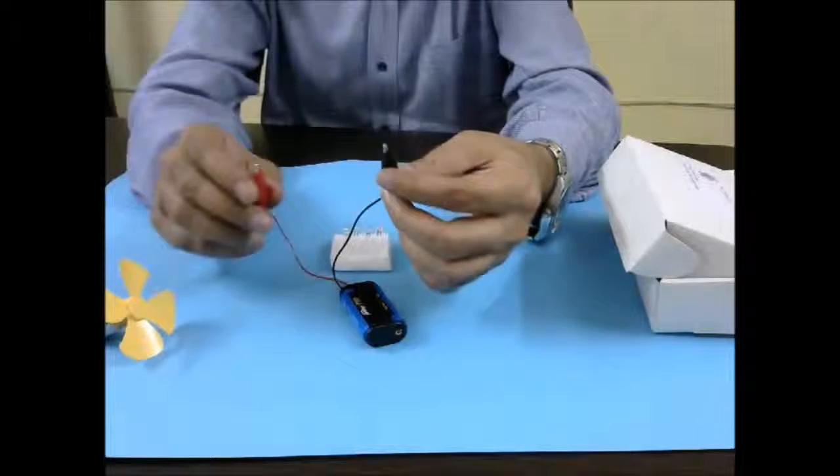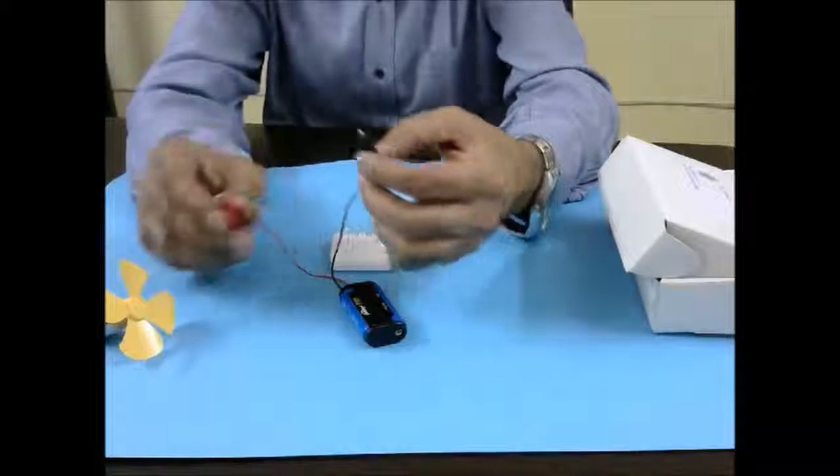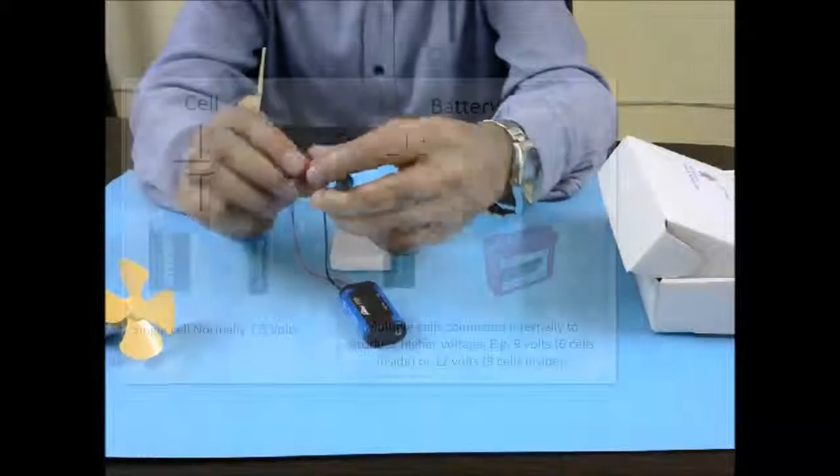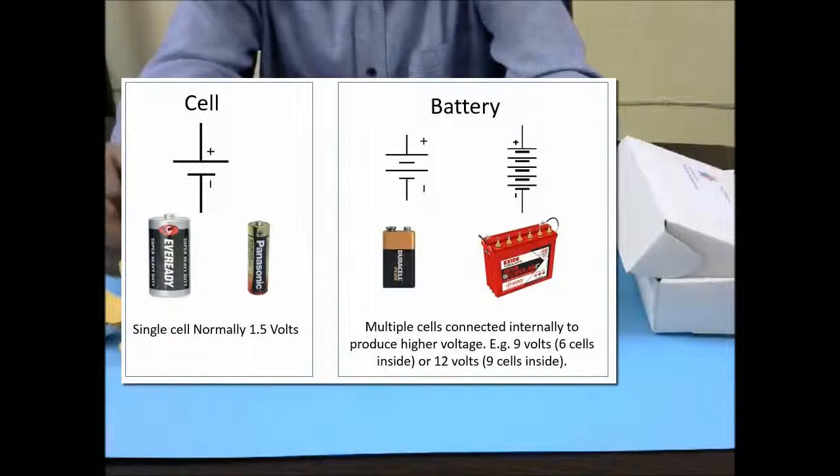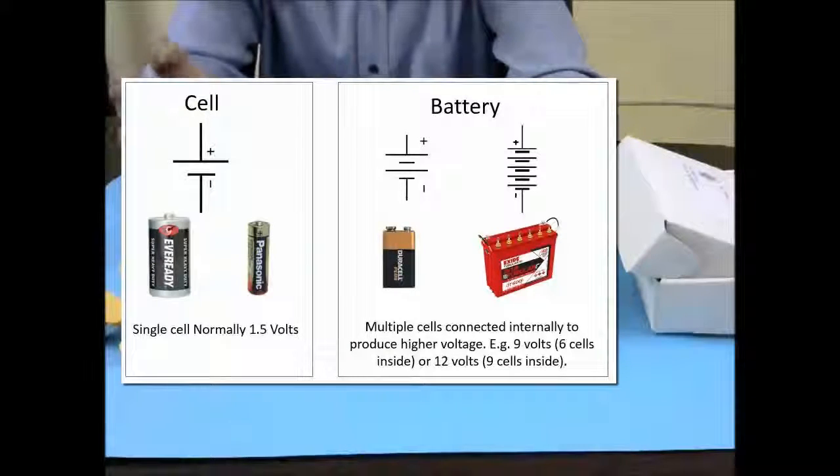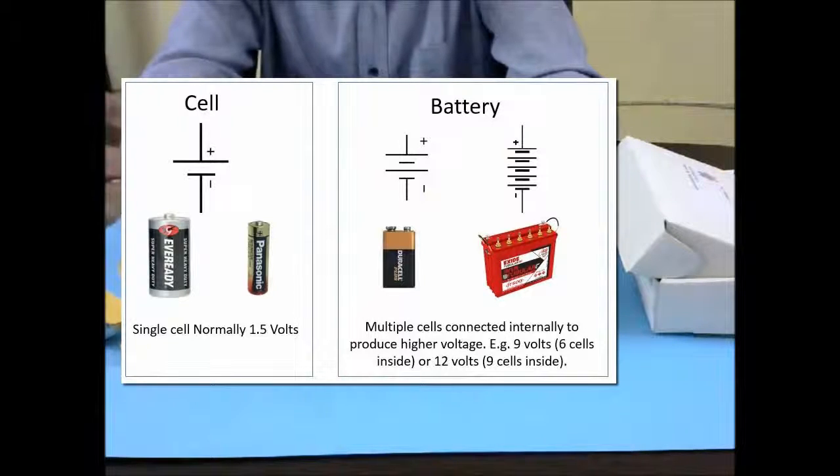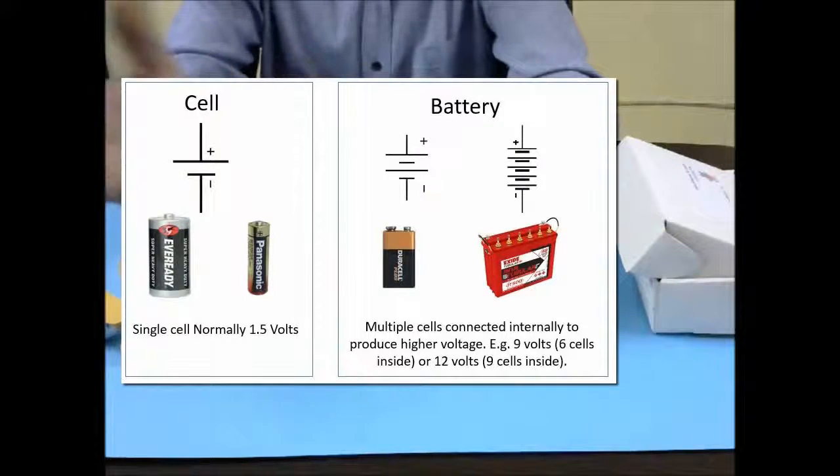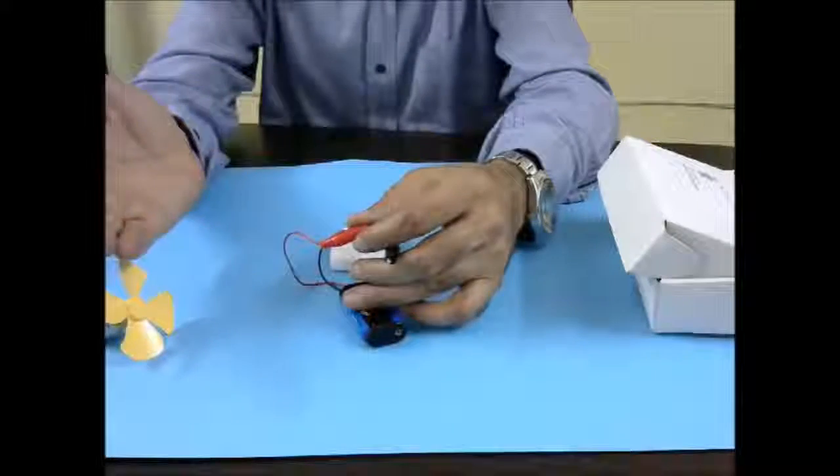Now you will see that sometimes I keep saying cell or a battery. You should understand the difference between the two terms. Cell means a single cell which normally produces 1.5 volts while when you connect two or more cells together to get higher voltage or higher current then that device is called battery. But many times we use these two terms interchangeably.